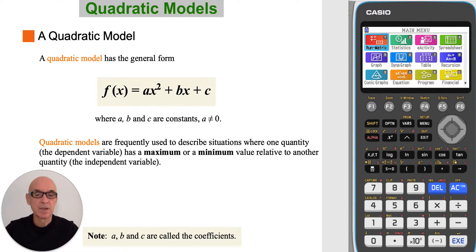Quadratic models are frequently used to describe situations where one quantity, the dependent variable, has a maximum or a minimum value relative to the other quantity, the independent variable.